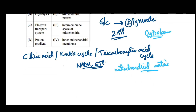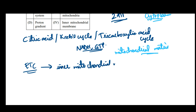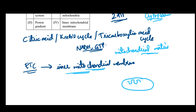Next is electron transport system, ETC. Electron transport system occurs in the inner mitochondrial membrane. Why? That is because mitochondria is a double membrane-bound organelle — it has an outer membrane as well as an inner membrane. The inner membrane has foldings known as cristae.